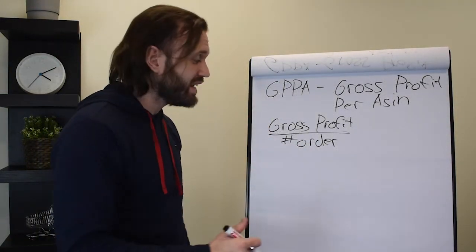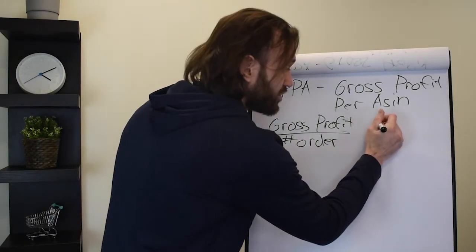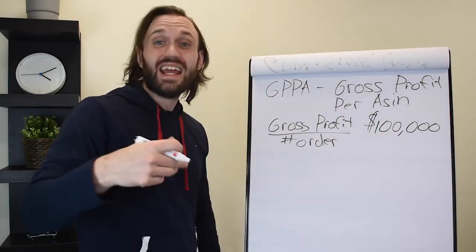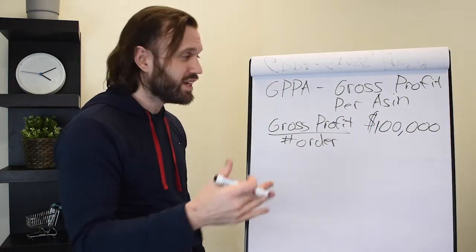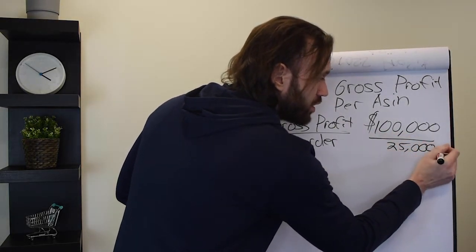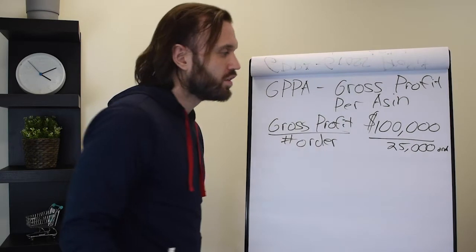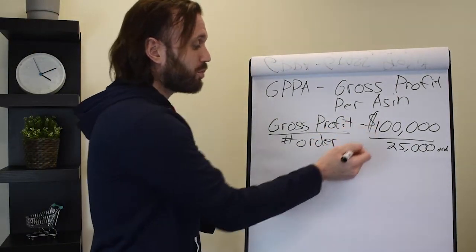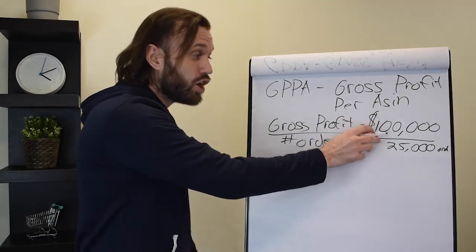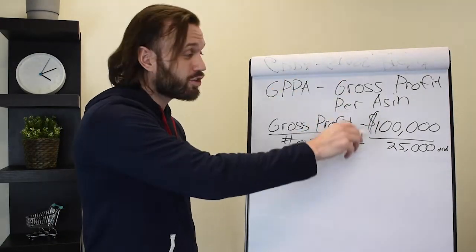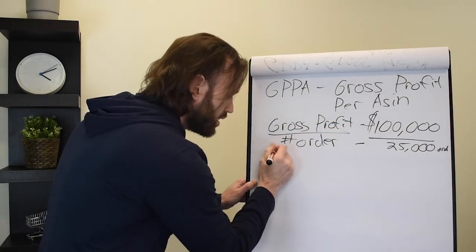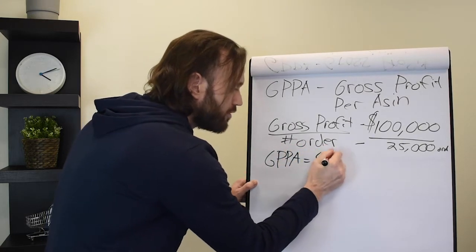So you take gross profits and divide that by your numbers of orders. So let's say in the past 30 days, you did $100,000 in gross profits. So you did $100,000 in gross profits, and the amount of orders you sold in those 30 days was 25,000. You would divide $100,000 by 25,000 orders, and your GPPA would be $4.